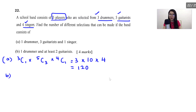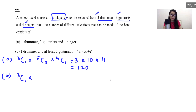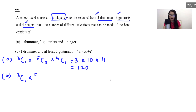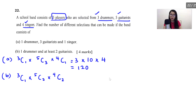Now let's solve for part B: 1 drummer and at least 2 guitarists, with a total of 5 players. So 1 drummer is 3C1. At least 2 guitarists means it can be 2, 3, or 4 guitarists — it cannot be 5 because 1 drummer is already chosen. For 2 guitarists: 3C1 × 5C2 × 4C2, since we need 2 more players from singers. For 3 guitarists: 3C1 × 5C3 × 4C1, needing 1 more player.